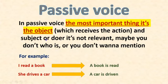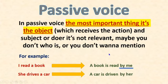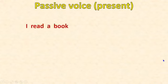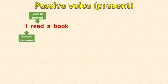But if you want to mention the subject, you have to write, for example, 'by me' or 'by her' because it's she. This part is optional — don't forget, the subject is optional. Now pay attention to the structure. We have the sentence 'I read a book.' You have your subject, your verb in present, and your object — 'a book.'